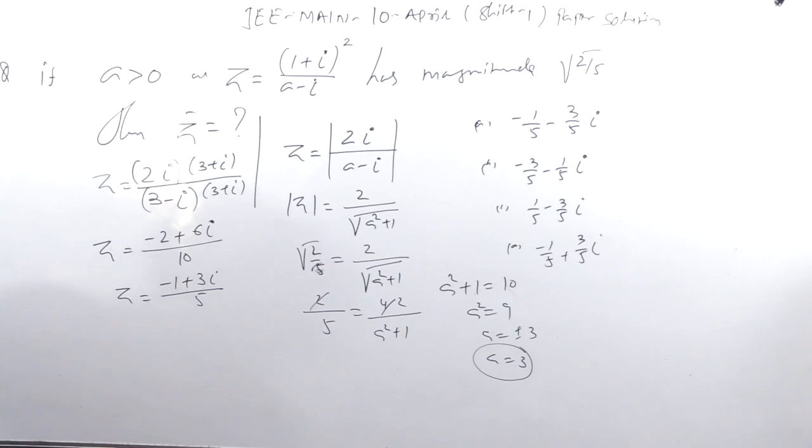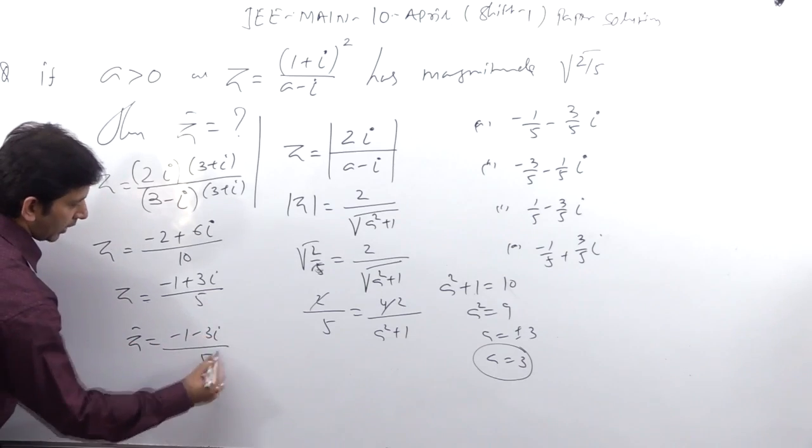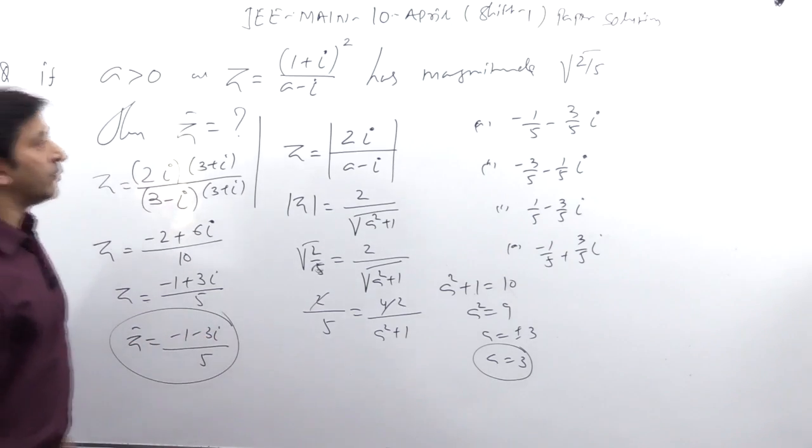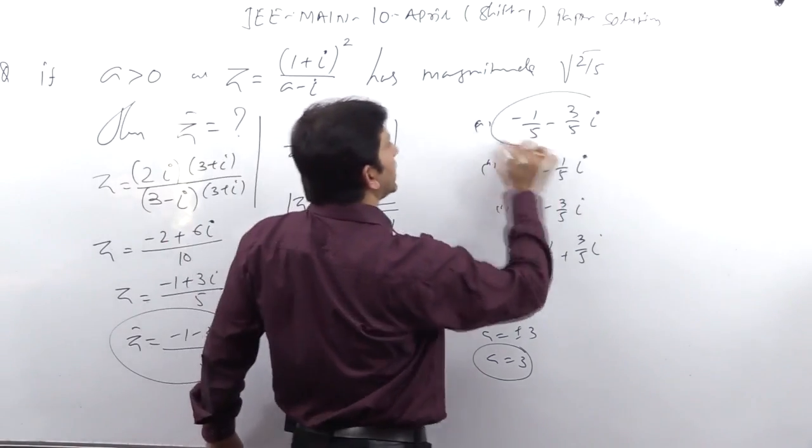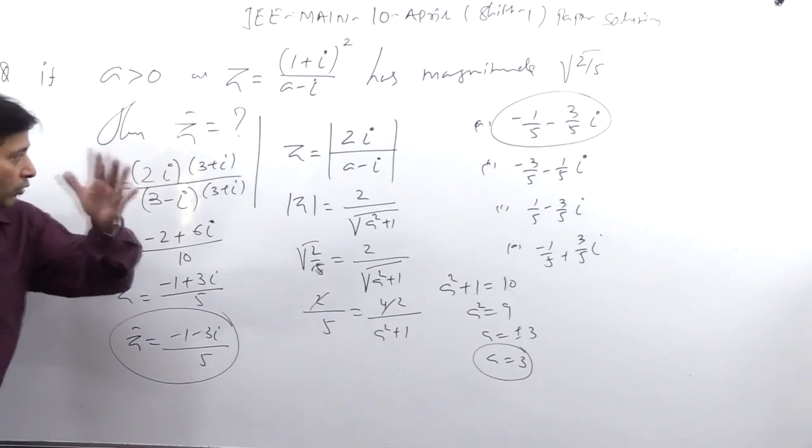Aapka iska conjugate poocha hai to (-1 - 3 iota) by 5 is the right answer. Yani agar ham dekha hai to logically this one is the right answer, (-1 - 3 iota) upon 5. Right, note down this question.